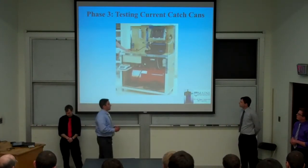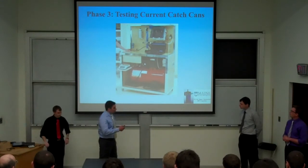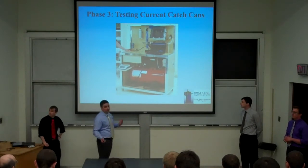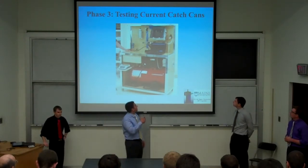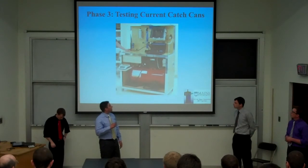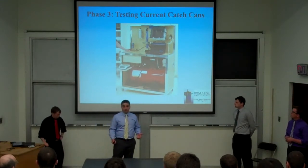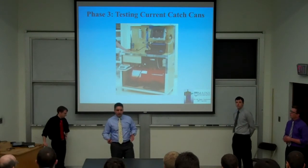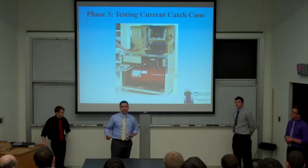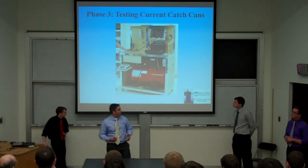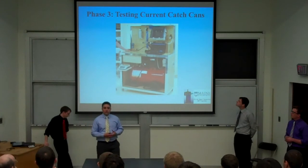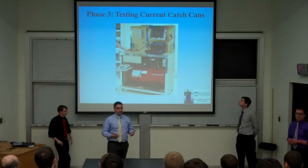To test catch cans, we start by charging the compressor, then weigh both the full oil reservoir and the empty catch can. We pick a desired flow rate — say 4 CFM — and adjust the air regulator to achieve that flow. We start the test by taking data and turning on the oil injection system. After about 10 minutes we stop, then re-weigh the oil reservoir and catch can to determine efficiency: how much oil was injected versus how much was actually collected. We also perform a differential pressure test to determine what restriction the system adds to the engine.